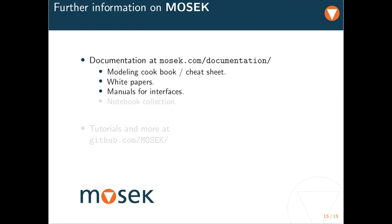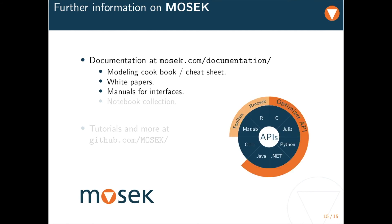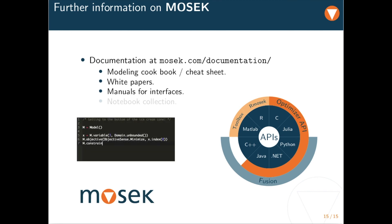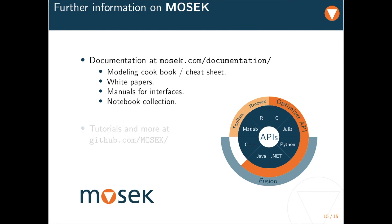On the same page there is an overview of the interfaces that can be used to solve problems with MOSEK. So there are interfaces for several languages, and what is interesting here is that MOSEK comes with its own modeling language called Fusion. Now Fusion is really designed for conic modeling, so that it's easy for the user to model conic constraints, because you can just write them down as you would on paper. Again on the documentation page there is a collection of notebooks that illustrate the use of Fusion for various example problems.